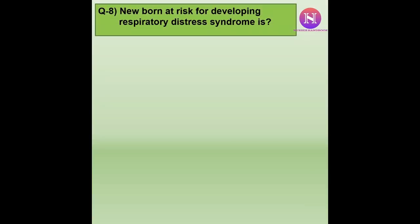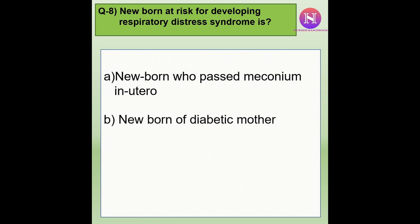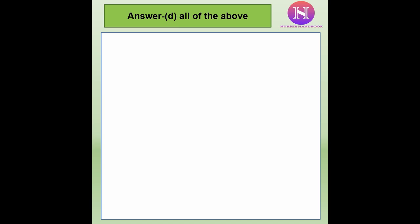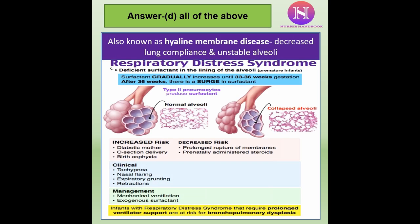Question 8: A newborn at risk for developing respiratory distress syndrome is — a. A newborn who passed meconium in utero. b. A newborn of a diabetic mother. c. A newborn with period of gestation less than 30 weeks. d. All of the above. The correct answer is d — all of the above. Respiratory distress syndrome, also known as hyaline membrane disease, involves deficient surfactant in the alveoli, causing decreased lung compliance and unstable alveoli. It is seen in premature babies, babies of diabetic mothers, and newborns with birth asphyxia. Main features are tachypnea, nasal flaring, expiratory grunting, and retractions. Management includes mechanical ventilation and exogenous surfactant administration.